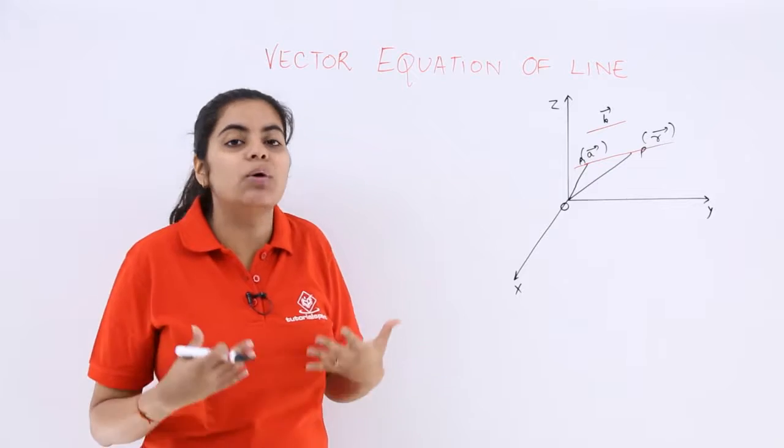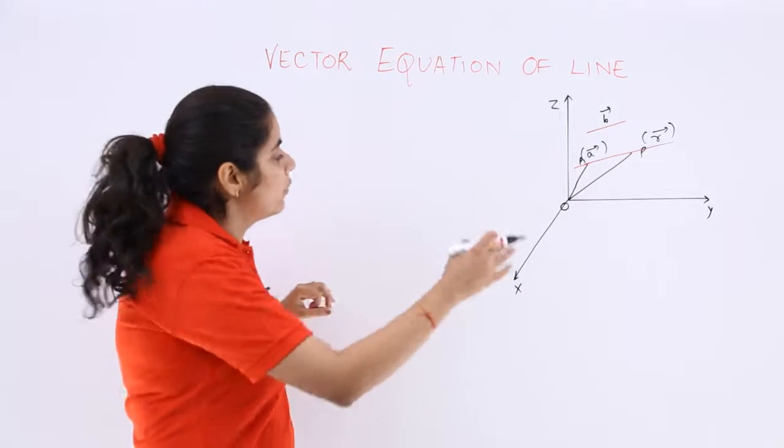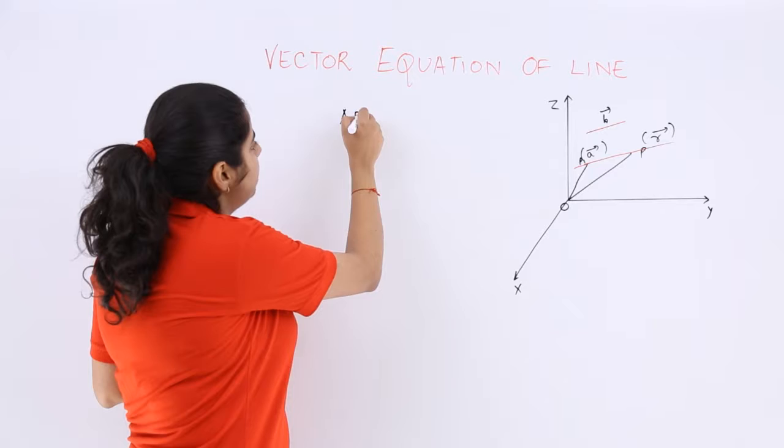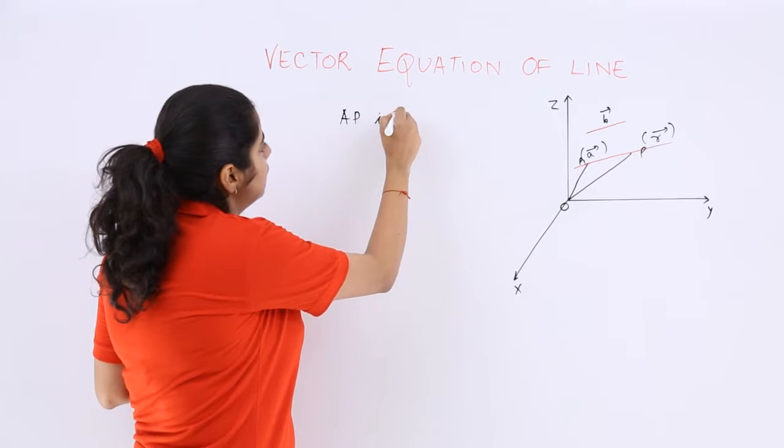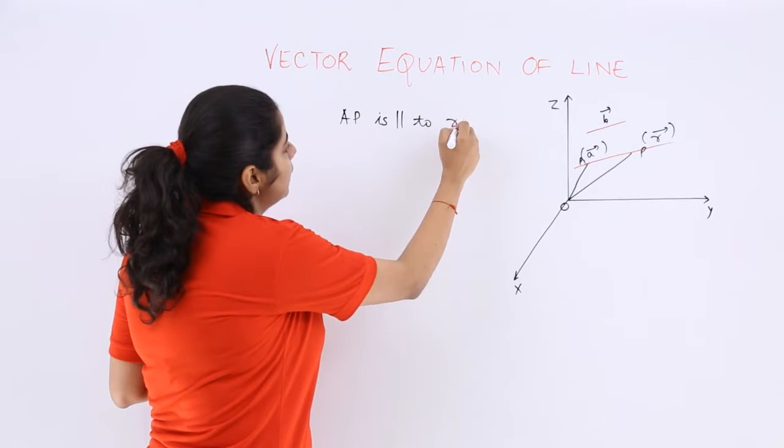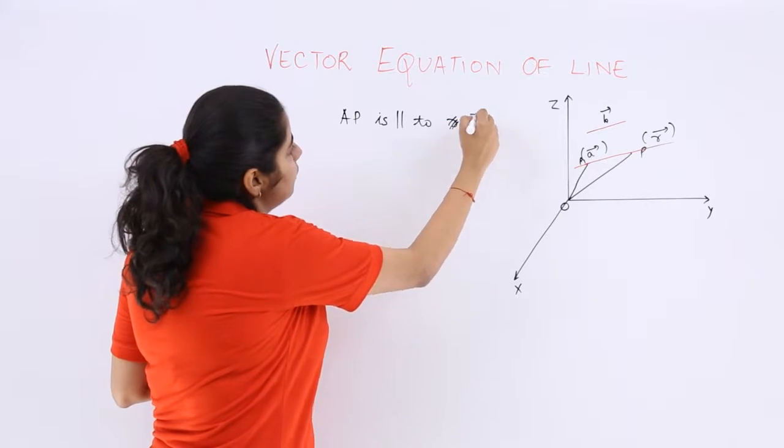So you have to find out this equation of the straight line ap. So frankly speaking, your ap is parallel to this b vector.